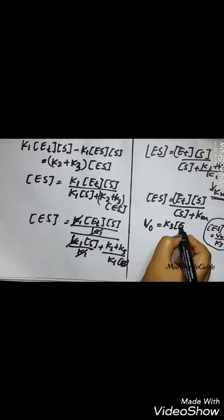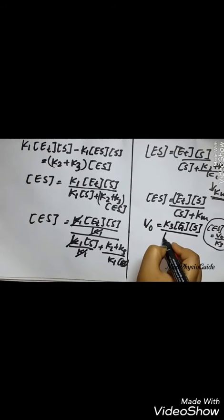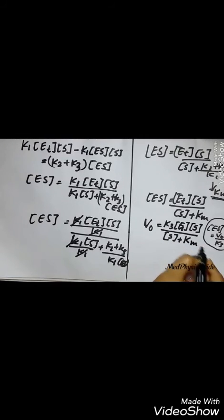V0 and the K3 goes to the other side. So we get V0 equals K3 ET into concentration of the substrate divided by concentration of the substrate plus Km. V0 was equal to concentration of ES into K3.